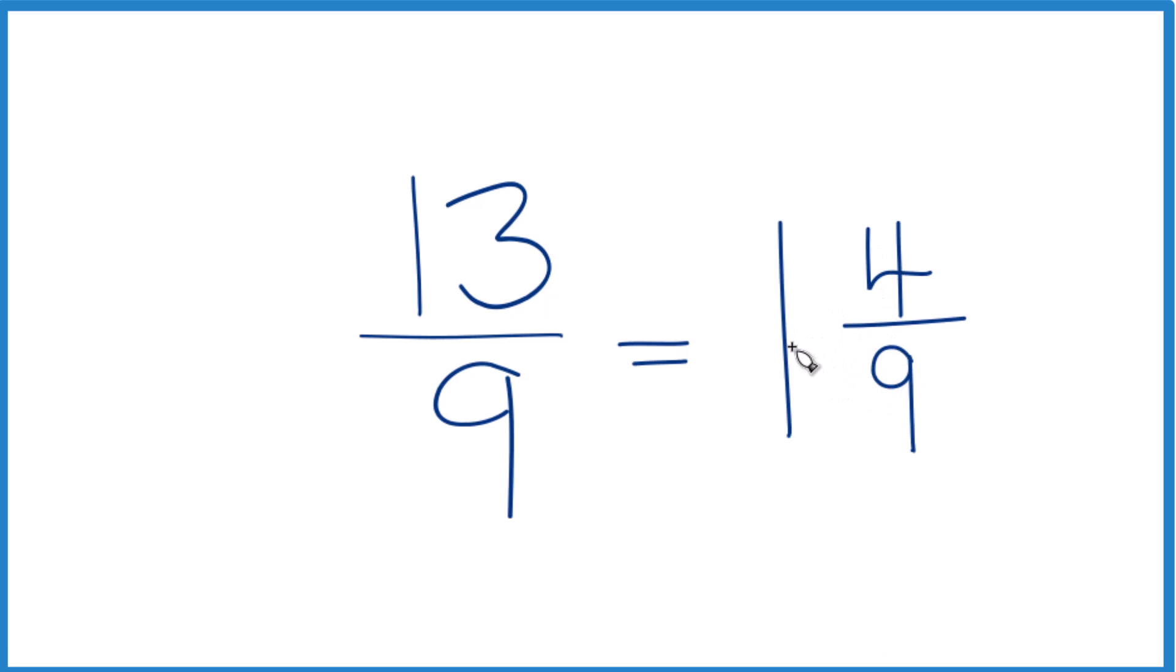And you can check that. 1 times 9 is 9. 9 plus 4, that's the 13, and then we keep this denominator here the same.